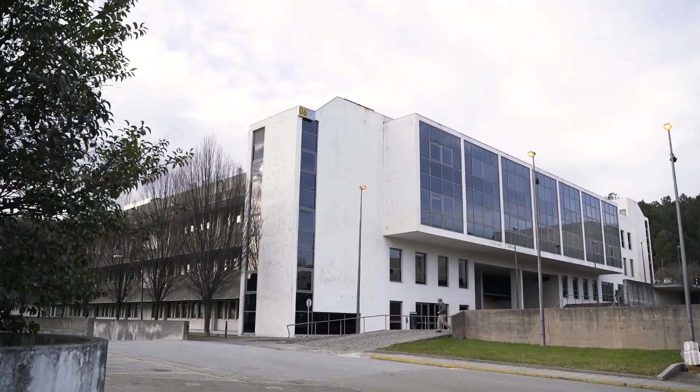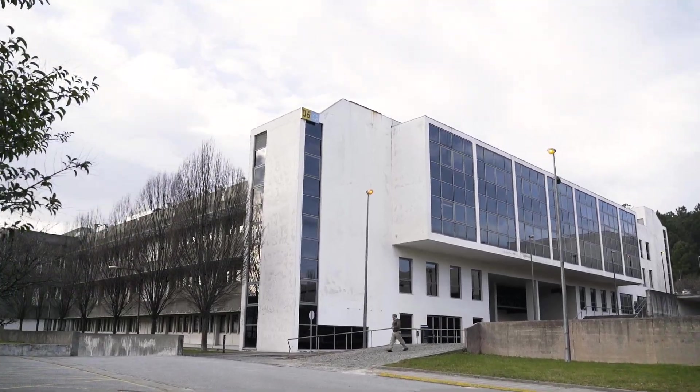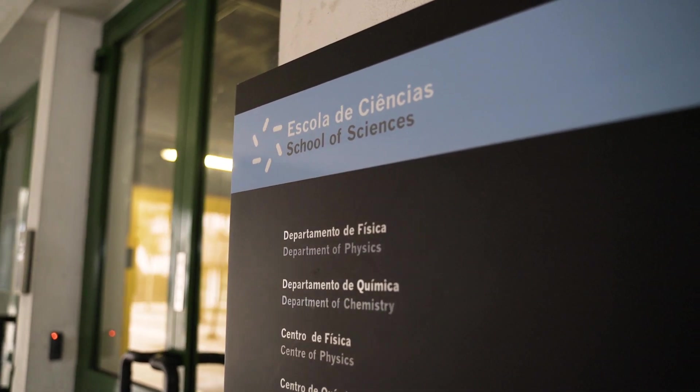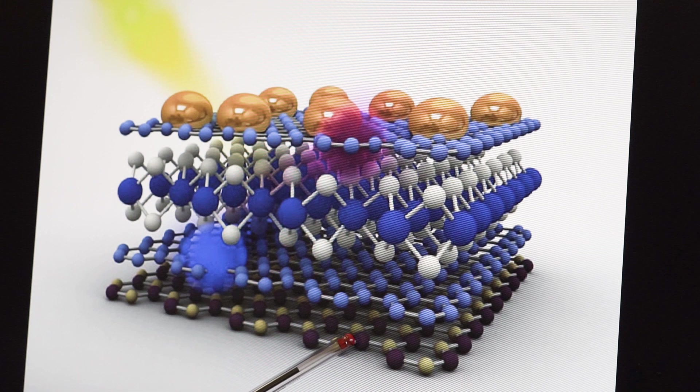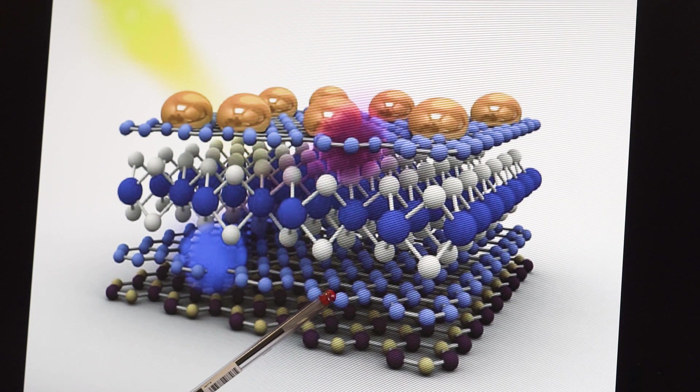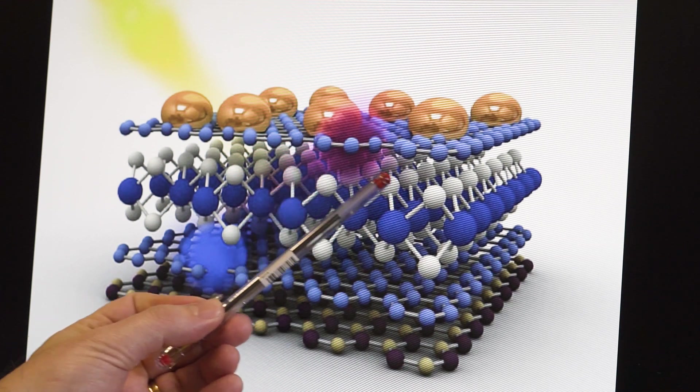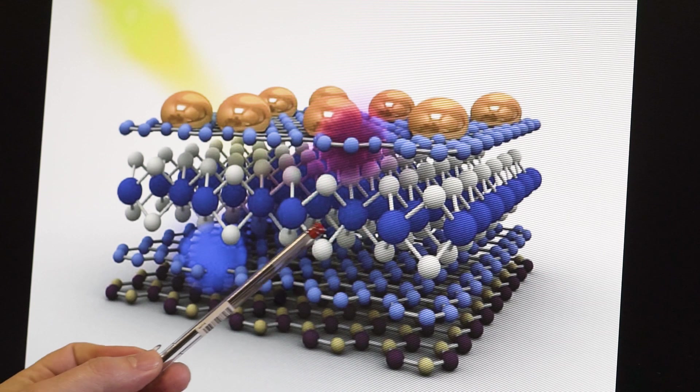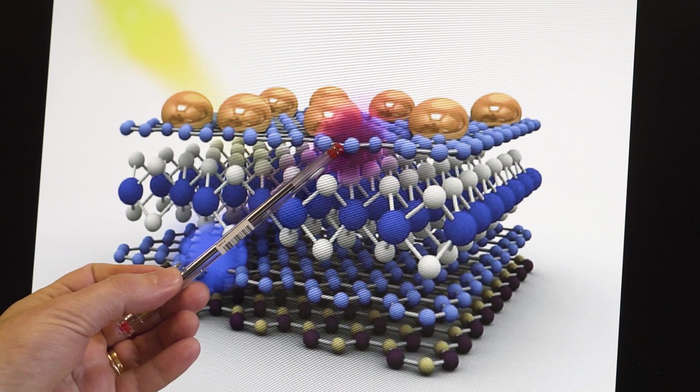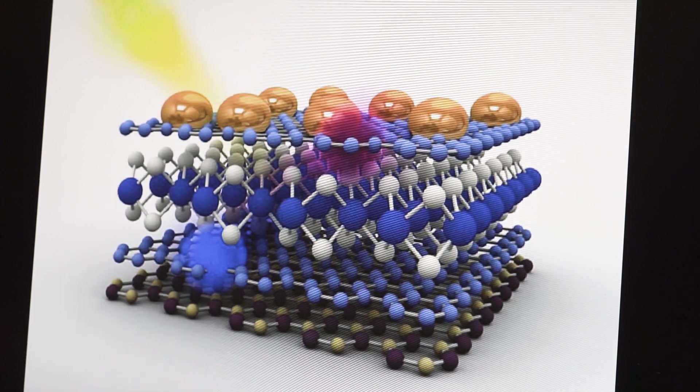The device is represented here on the screen. It's composed of different types of 2D materials. In this case, there are three different types: hexagonal boron nitride on the bottom, then graphene represented by the blue spheres, the transition metal dichalcogenide with a fairly complicated structure in between, and on top another graphene sheet with metallic nanoparticles.